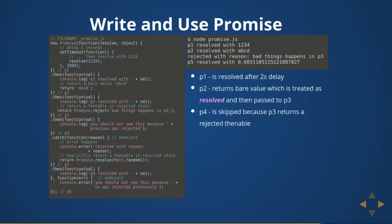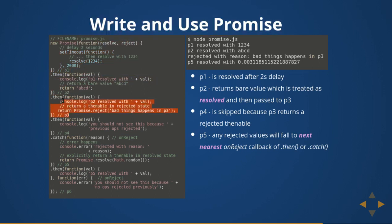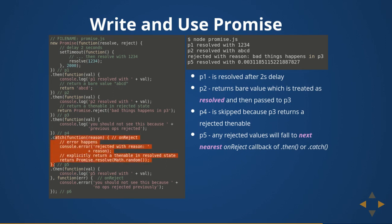This is how promise chaining works: you receive the first promise p1, fire a `.then()` returning a second promise, then fire another `.then()` returning a third promise. For example: p1 is resolved after two seconds; p2 returns a base value treated as a result; p3 is rejected. Because p3 is rejected, p4 is skipped — any rejected value falls to the next nearest `onReject` callback or `catch` block. So p4 is skipped and p5 falls into the catch block.